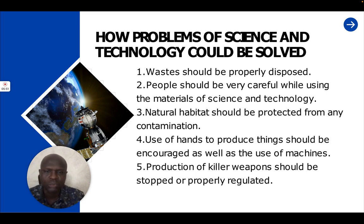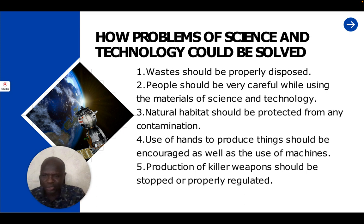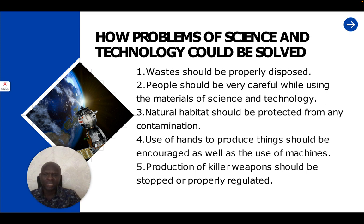Whenever we are making use of things created by science and technology, we should be careful so that we use them very well. Natural habitats should be protected from any contamination. Also, the use of hands to produce things should be encouraged, as well as the use of machines. We should also still encourage the use of hands — that is, craftsmanship — and not completely eradicate it. Then, production of killer weapons should be stopped or properly regulated.